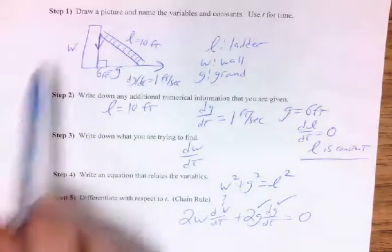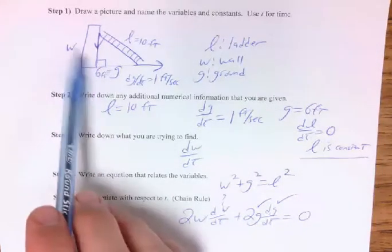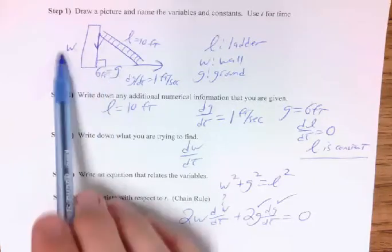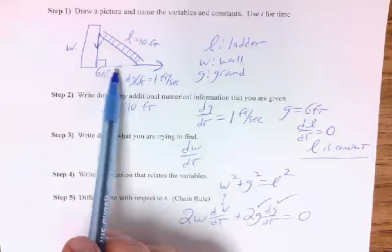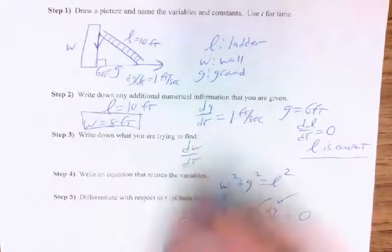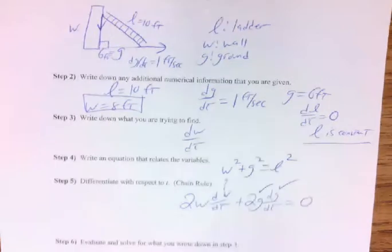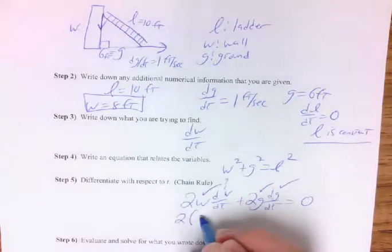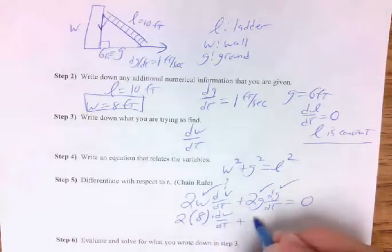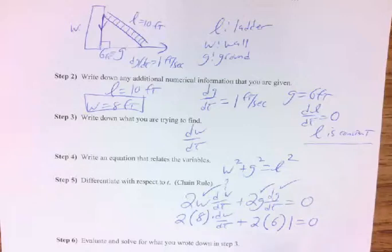Luckily we know how to find W — this is going to happen a lot: you won't realize you need something else until you get to this step. We can find W using the Pythagorean theorem. Hopefully you recognize this is just a Pythagorean triple — a 3-4-5 multiplied by 2: 6, 8, 10. So W = 8 feet. Now I know W and can plug everything in: 2 times 8 times dW/dt plus 2 times 6 times 1 equals 0.